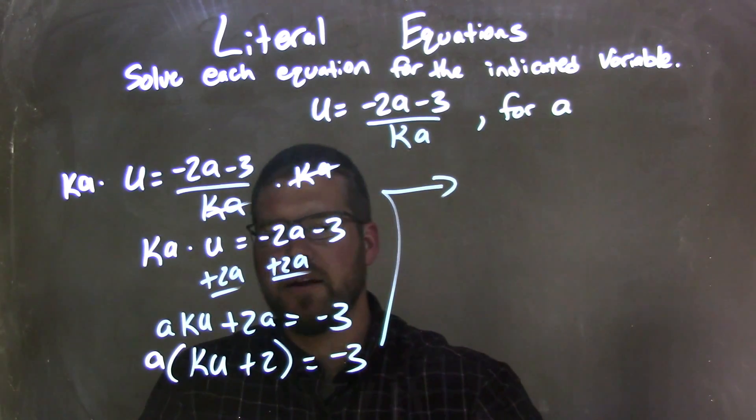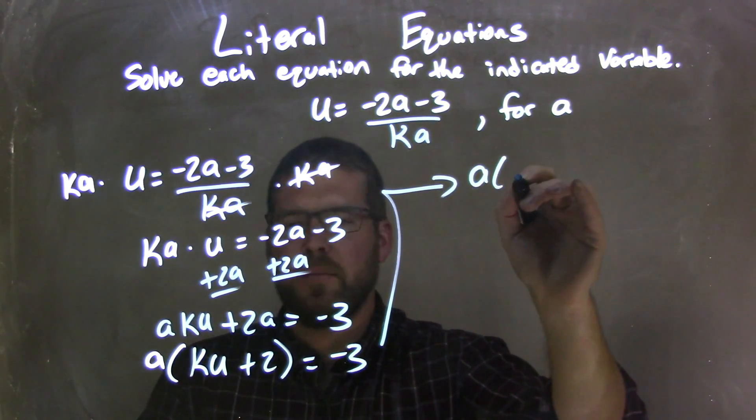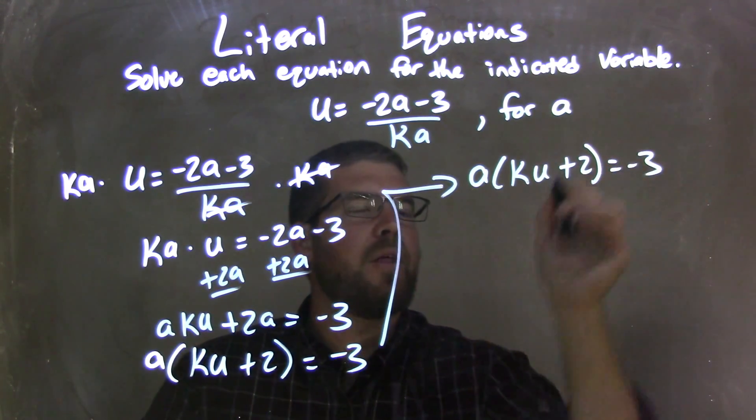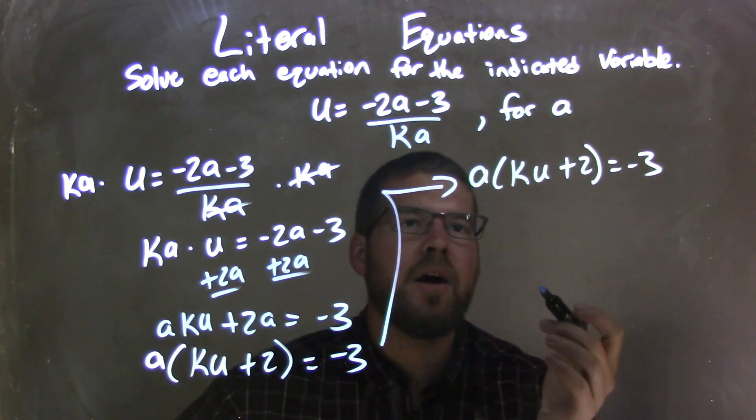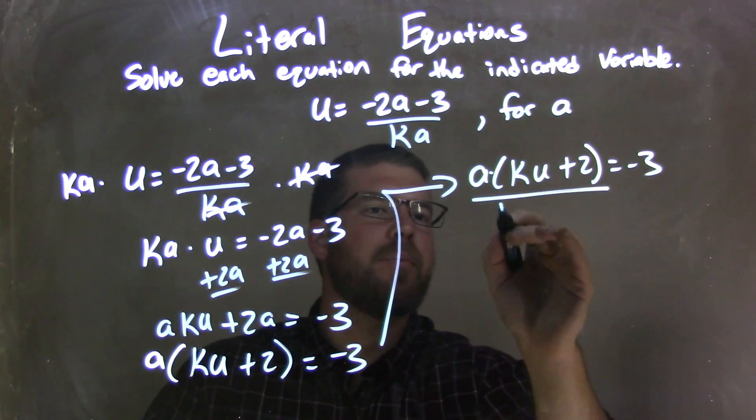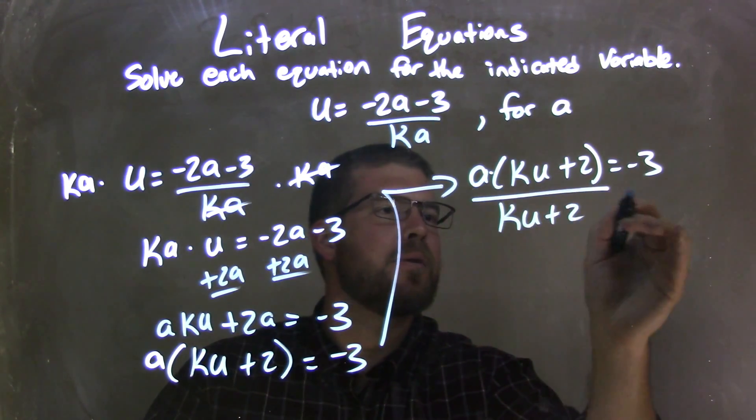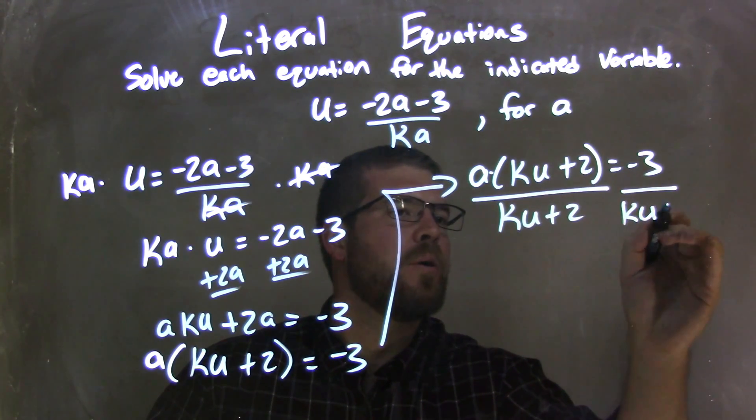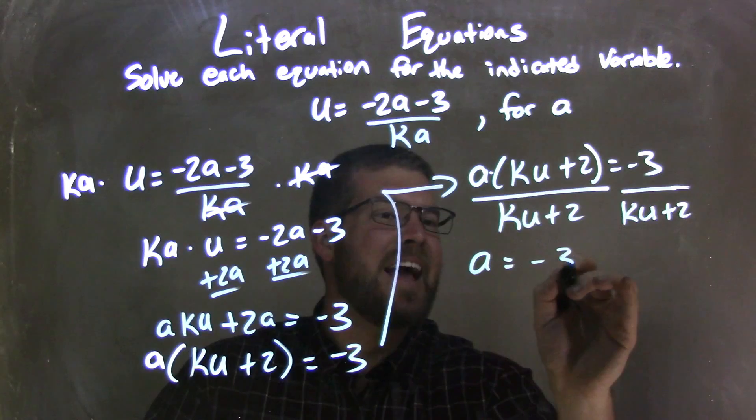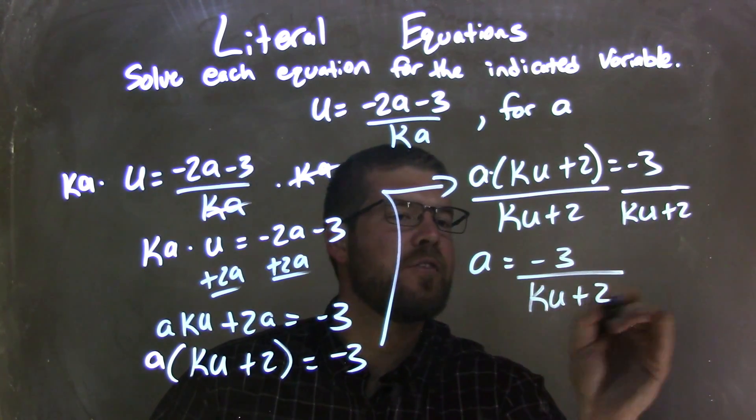So I'm going to rewrite this over here. a times ku plus 2 equals negative 3. From there, I know there's multiplication, opposite of multiplication is division, so I'm going to divide both sides by ku plus 2.